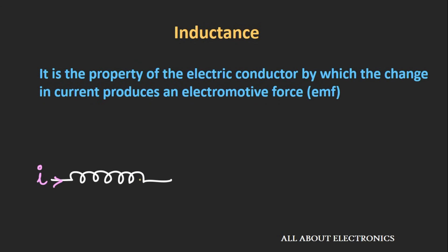Let's say we have one coil and current I is flowing through this coil. The rate of change of current through this coil produces an EMF or a voltage. If this electromotive force or voltage is produced within that same coil, then that is called self inductance.